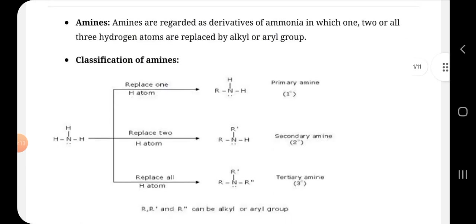First of all, amines are regarded as derivatives of ammonia in which one, two, or all three hydrogen atoms are replaced by alkyl or aryl group. Alkyl are the ones with alkanes, haloalkanes, and aryl are the benzene ones.